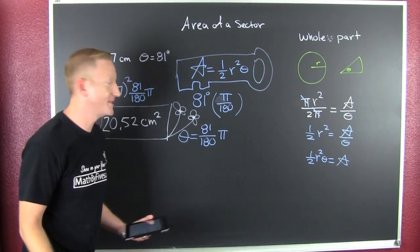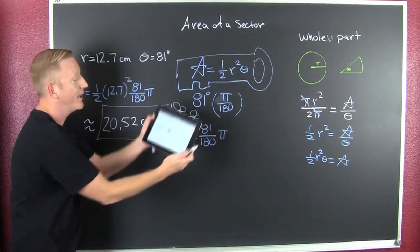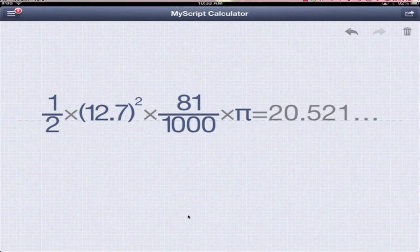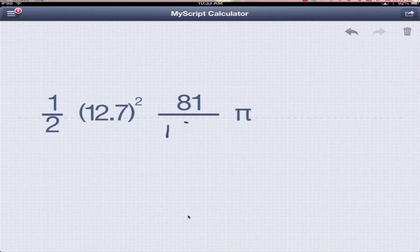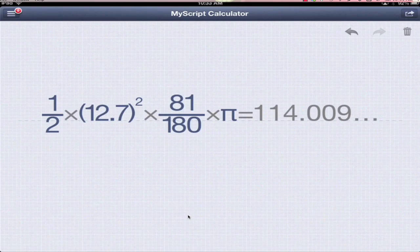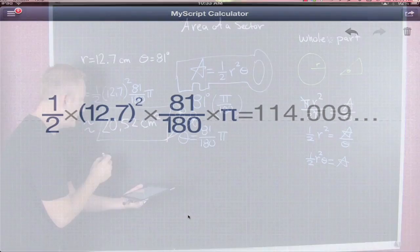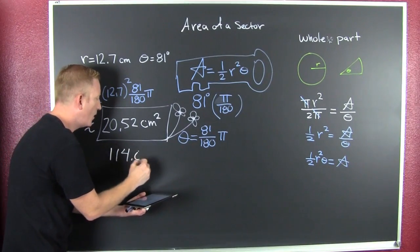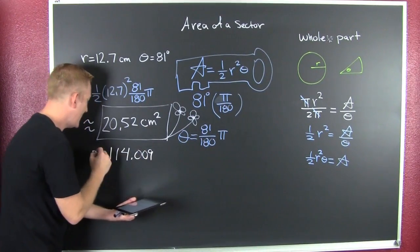Before you bomb the comments up, I miscalculated that when I threw it in here. What should this be? 20.5! I really wanted that to be 180. And that's how we get 114.009. This was 114.009 ish.